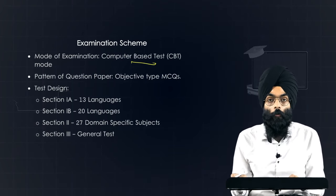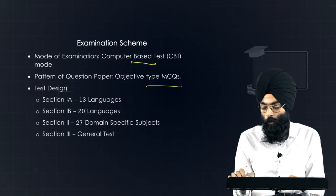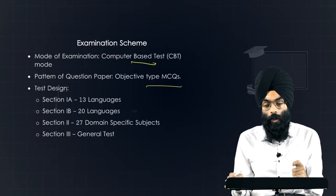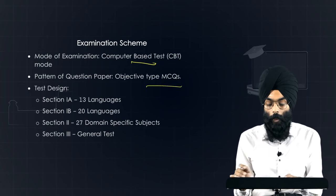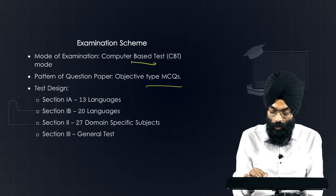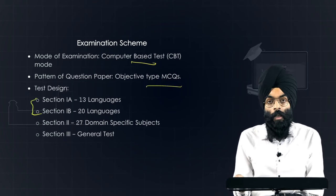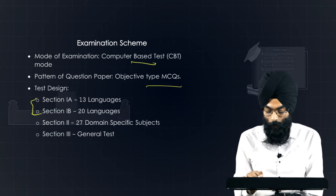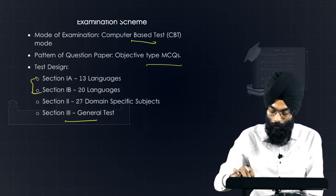Now coming to the pattern of the question paper — it's objective-type MCQs, so that should give you some solace. The overall test has been divided into three sections: Section 1 consists of languages, Section 2 is 27 domain-specific subjects, and Section 3 is a general test.